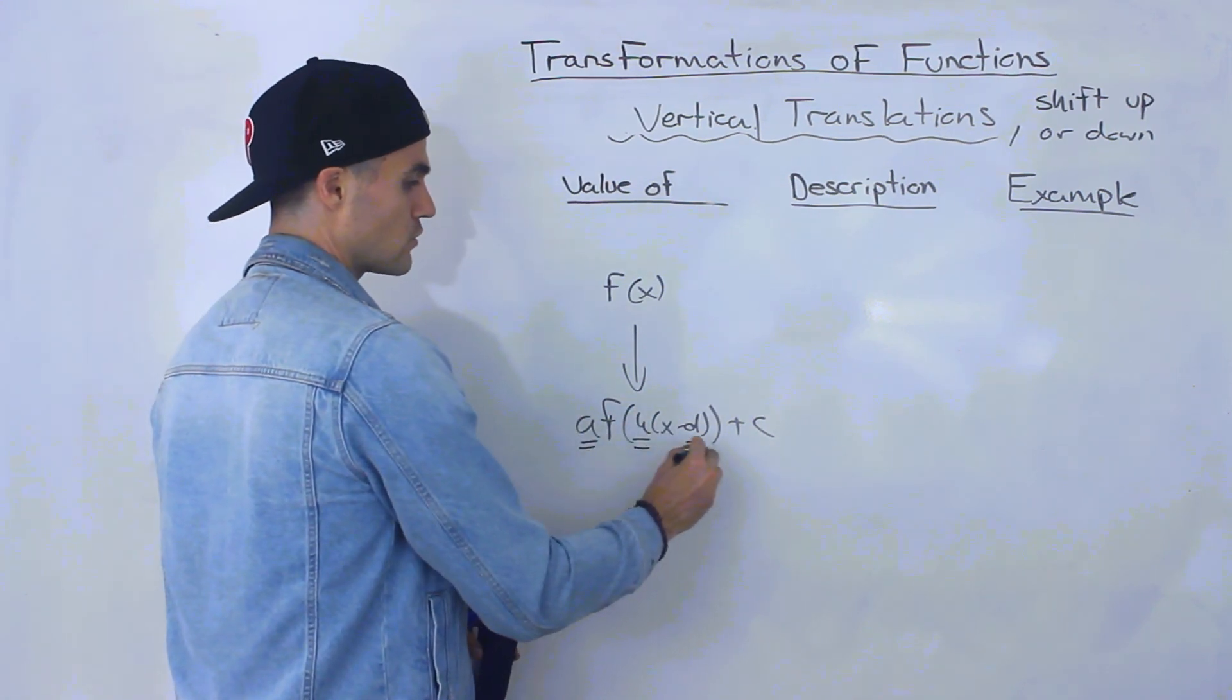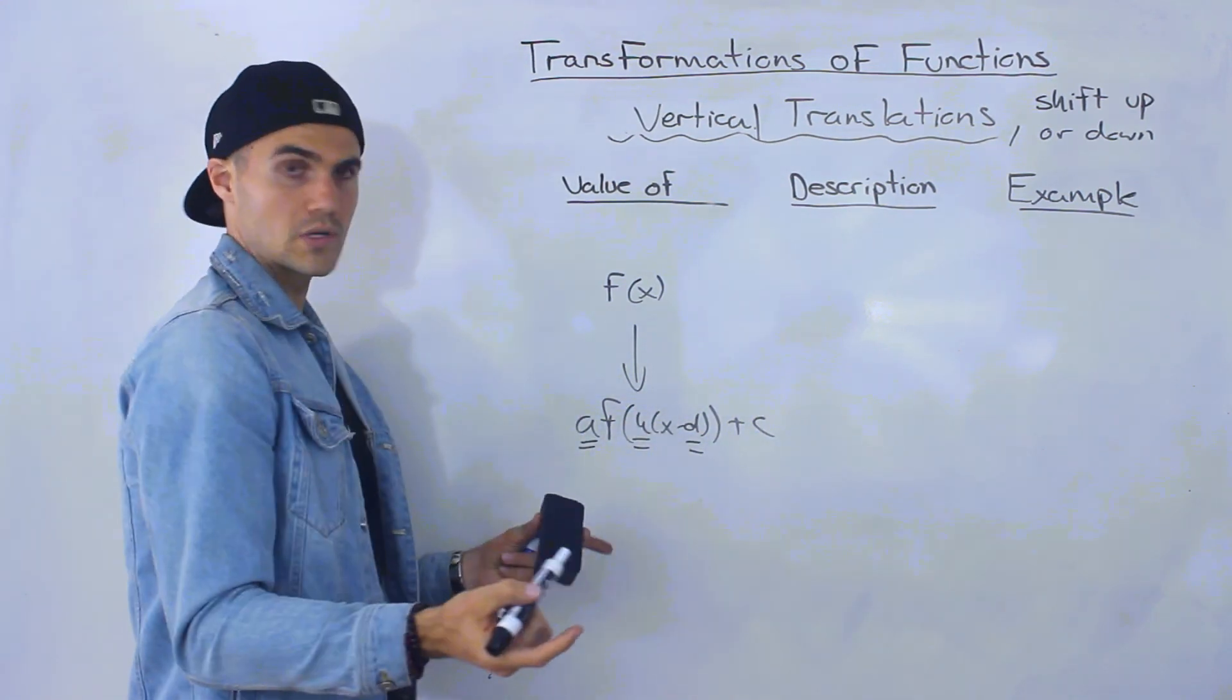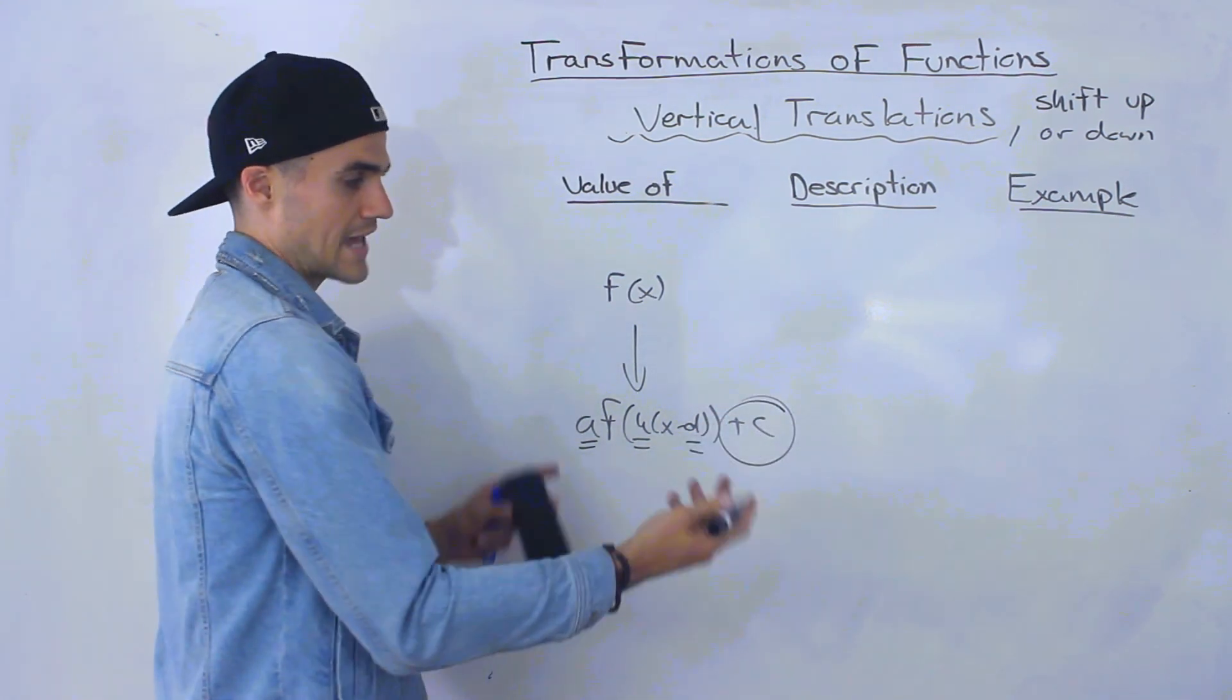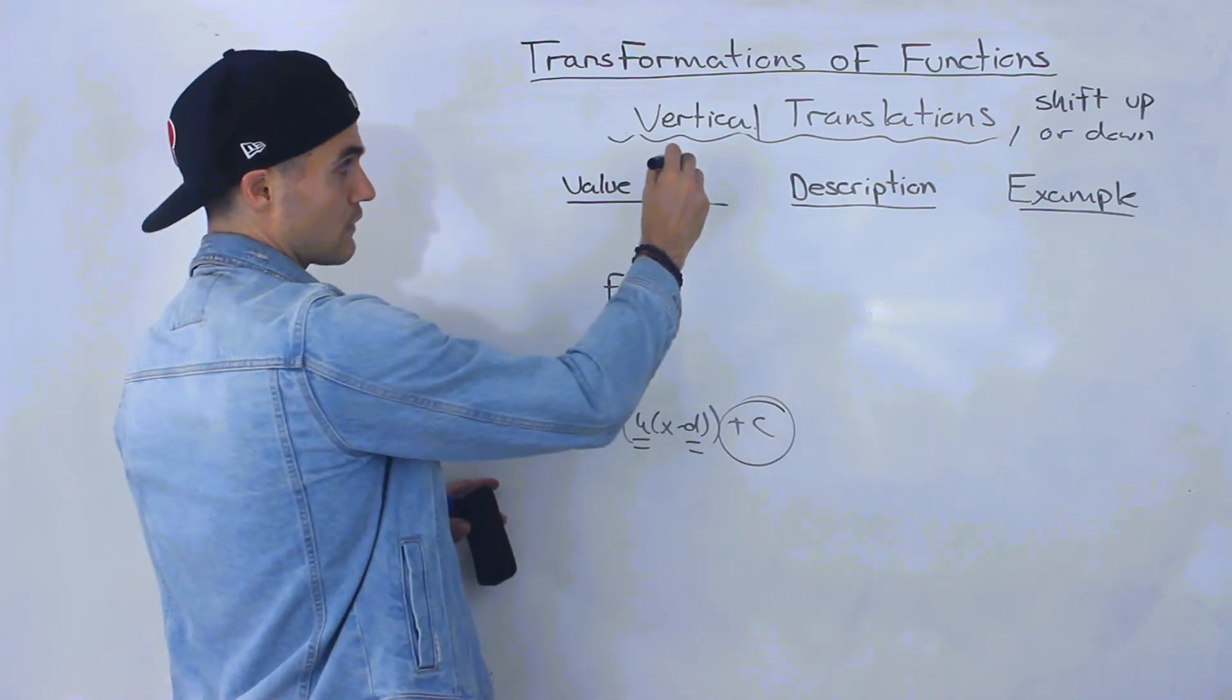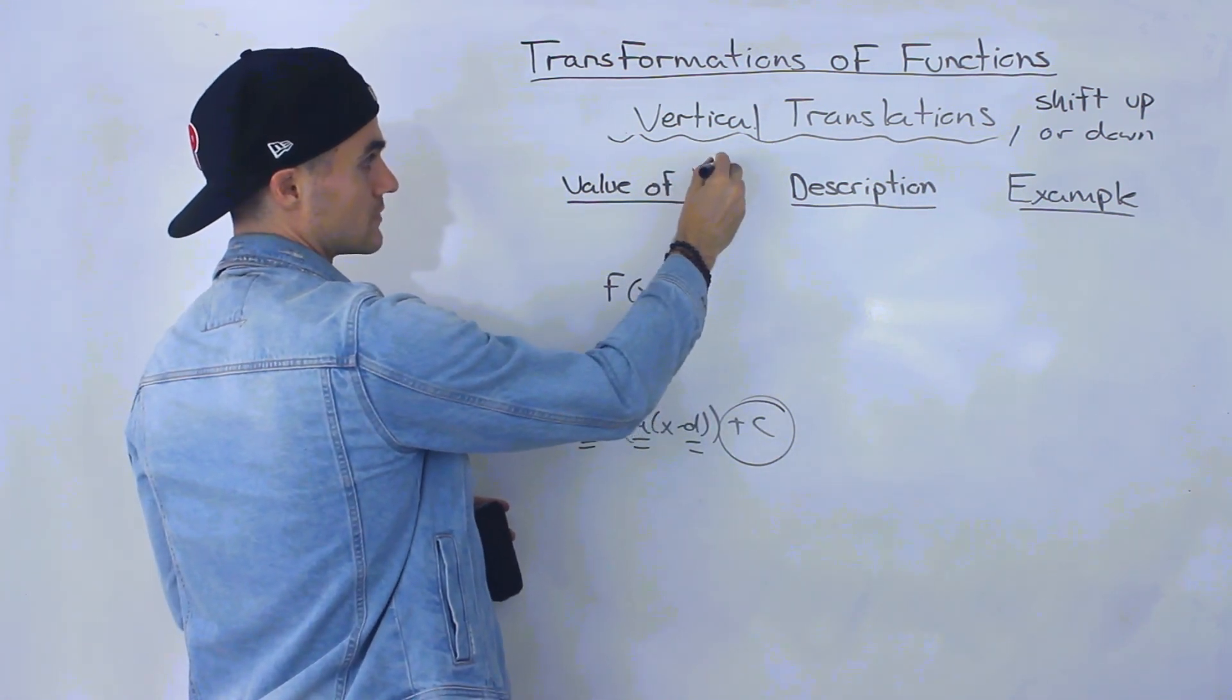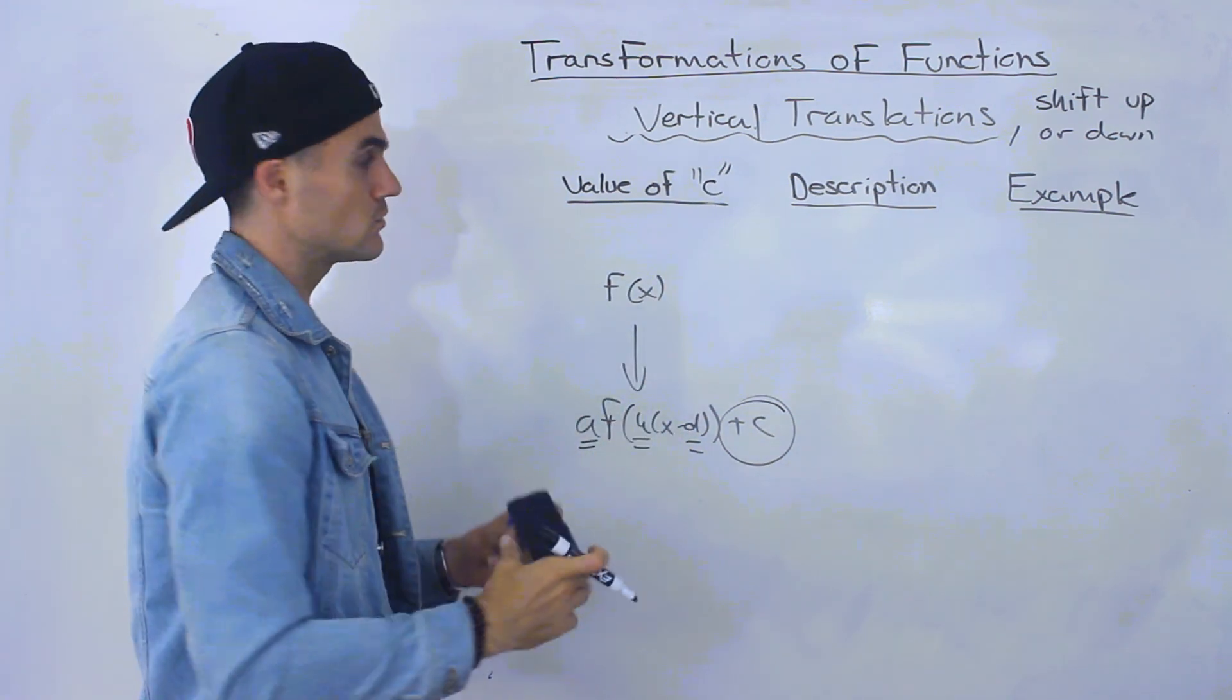We covered the A value, the K value, the D value. So what's left to cover? The C value. And that's actually what's going to tell us if a function is shifted up or down. It's going to depend on the value of C.